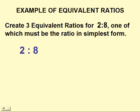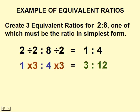Find a factor that divides into both 2 and 8, and that will give us the ratio in simplest form, 1 to 4. So 1 to 4 is an equivalent ratio for 2 to 8.